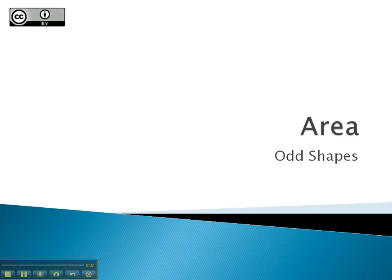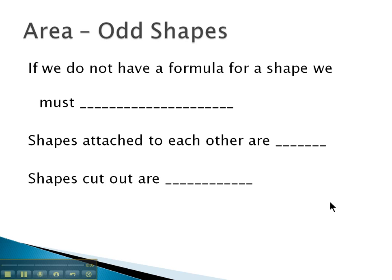In this video, we're going to take a look at finding the area of odd shapes that we don't have a formula for. If we don't have a formula for a shape, what we must do is slice it up into pieces that we can find the area for.